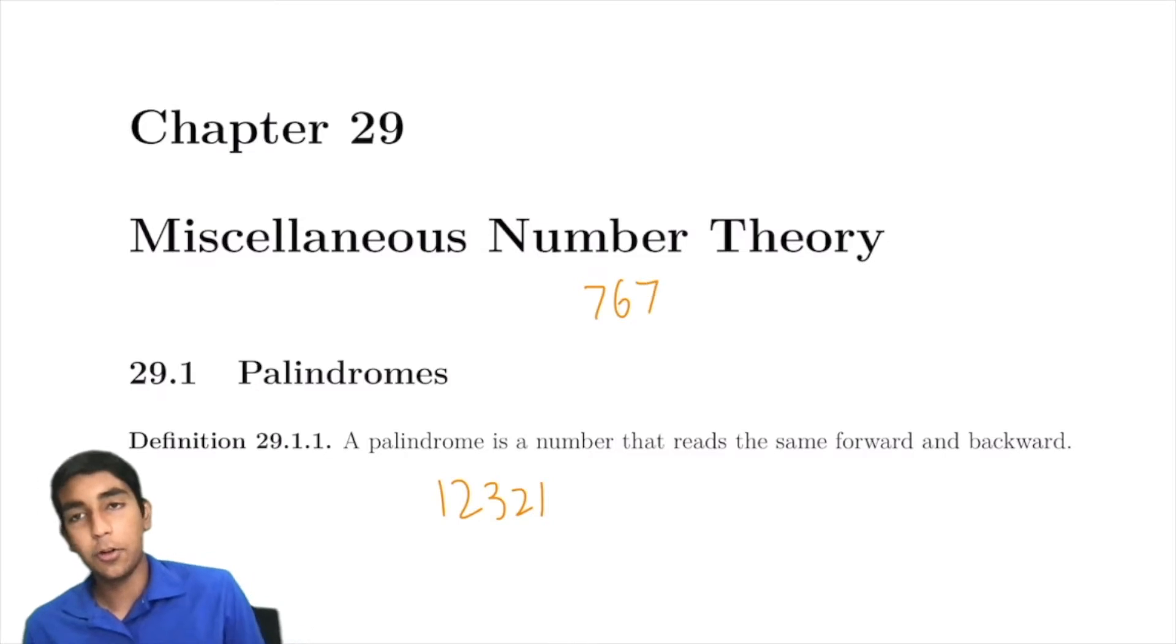767 is a palindrome, but something like 37 or 378 is not because the opposite digits have to be equal. For example, 7 has to be equal here, but in this case both of these digits are not equal, so not a palindrome.